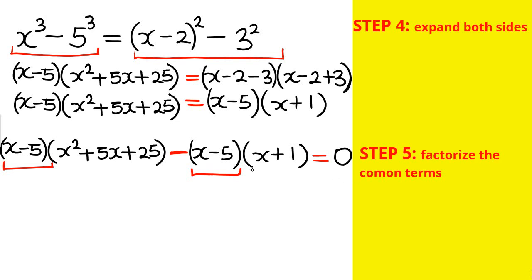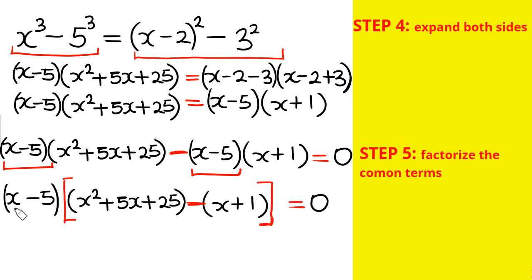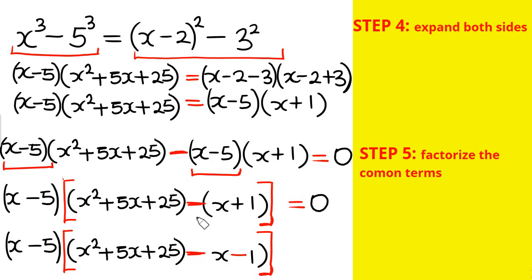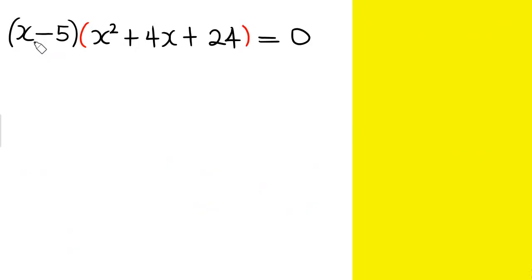Step 5: Factorize the common factor. Factoring out (x - 5): (x - 5)[x² + 5x + 25 - (x + 1)] = 0. Expanding the bracket: minus times x gives minus x, and minus times 1 gives minus 1. Combining 5x - x = 4x and 25 - 1 = 24, we get (x - 5)(x² + 4x + 24) = 0.